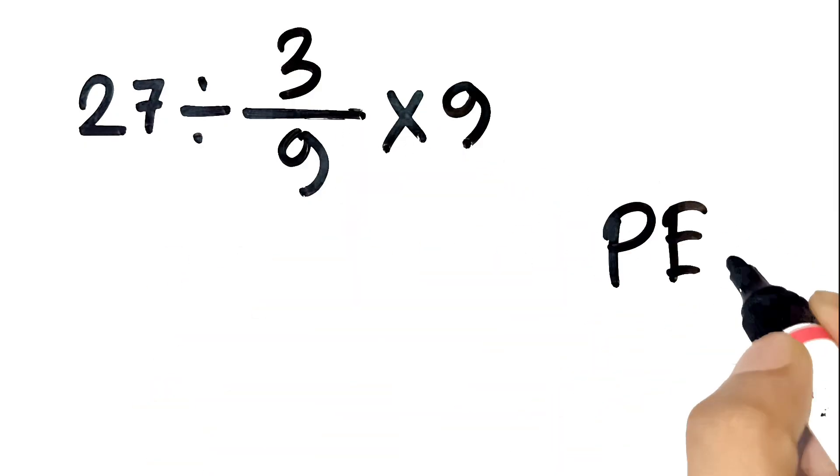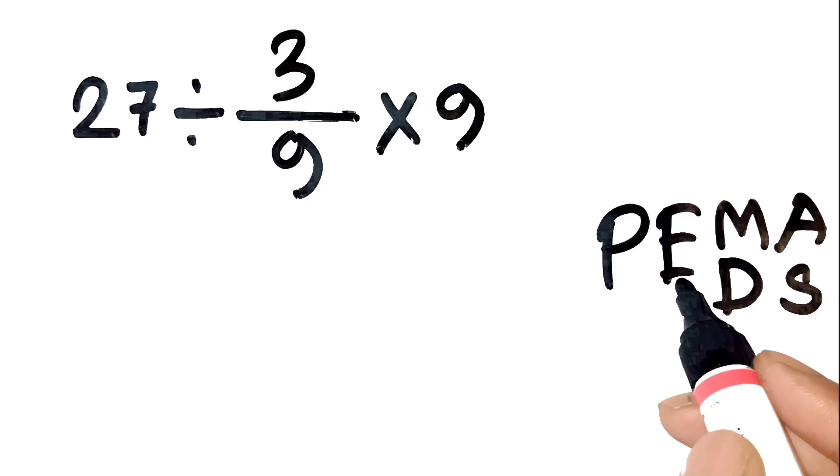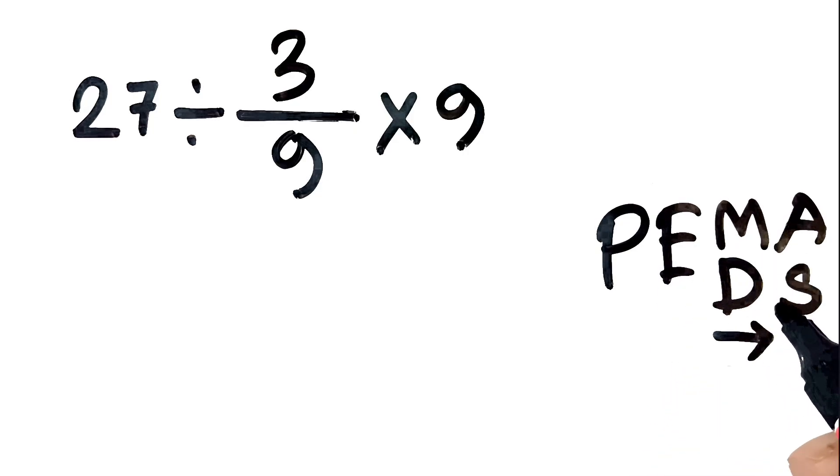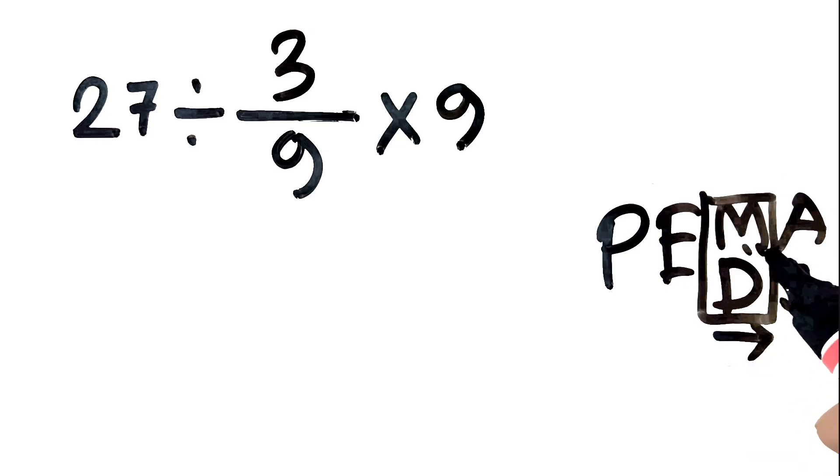We need to follow PEMDAS. For those who forgot, that's parentheses first, then exponents, then multiplication and division from left to right. Very important. Multiplication and division have equal priority. So we just go left to right.